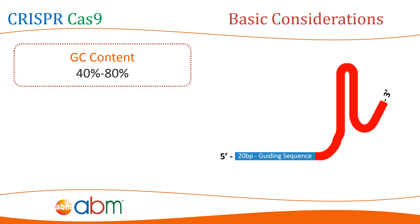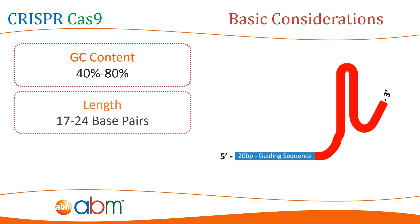1. GC content. The typical range is between 40 to 80% GC content. A higher GC content stabilizes the RNA-DNA duplex while destabilizing off-target hybridization. 2. Length. The length could be adjusted in a range from 17 to 24 base pairs. A shorter sequence leads to minimized off-target effects.